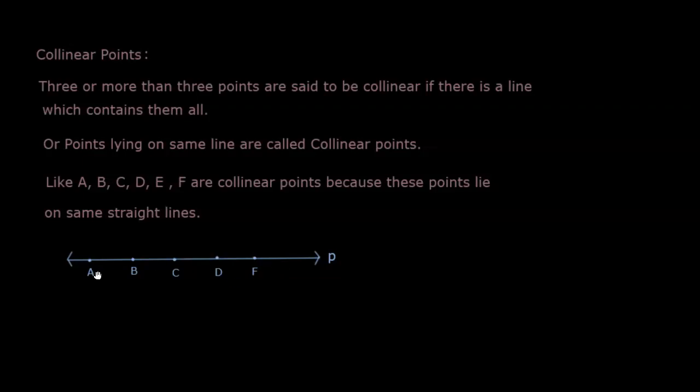These points, point A, point B, point C, point D, point F, these points are called collinear points because they all lie on the same line.